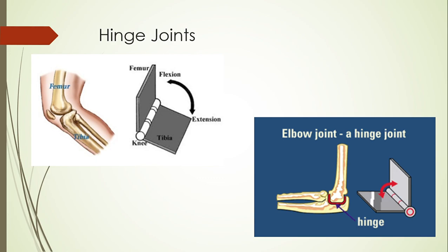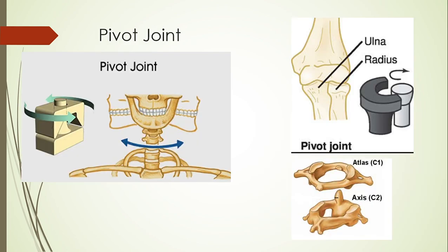Now some of you are saying that if you can turn your forearm you can rotate it around. But remember, you're not actually doing that from your elbow. What you are doing is using a different kind of joint — a pivot joint. A pivot is a rotational joint. The most well-known example is at your first two vertebrae: your atlas and your axis.